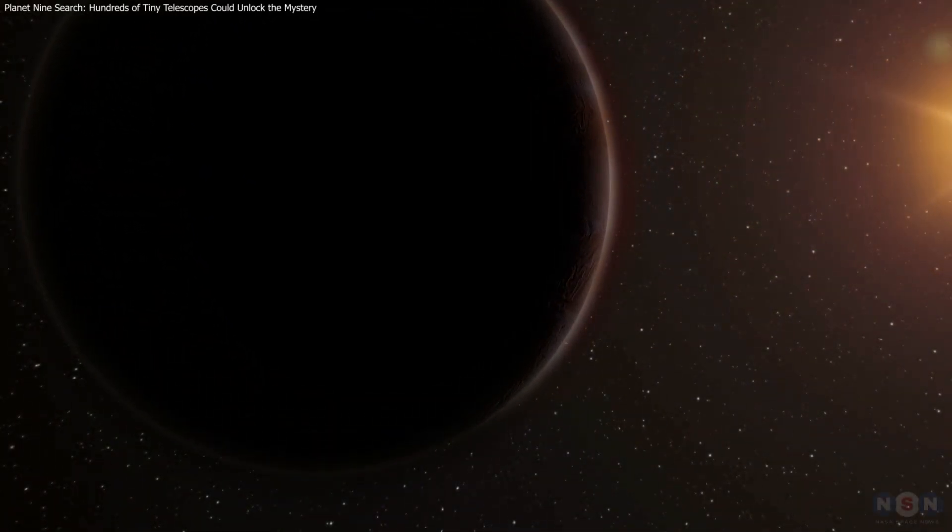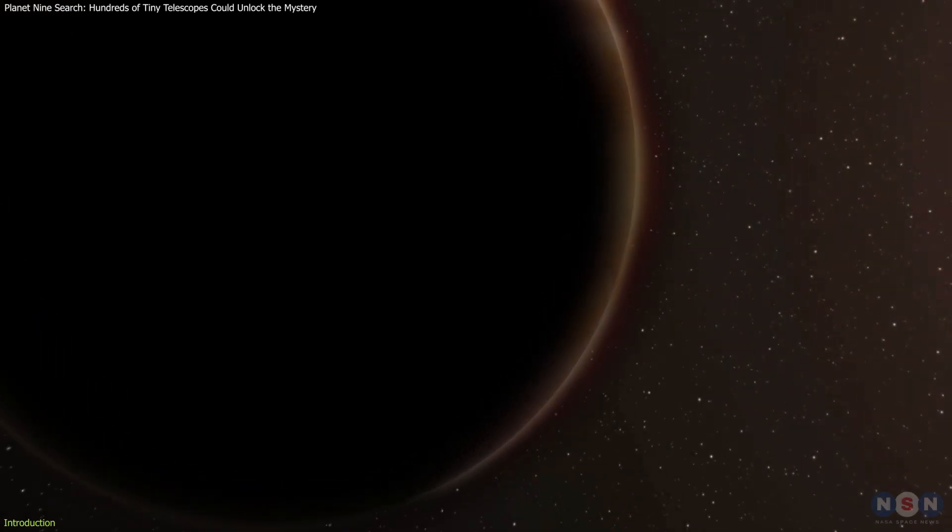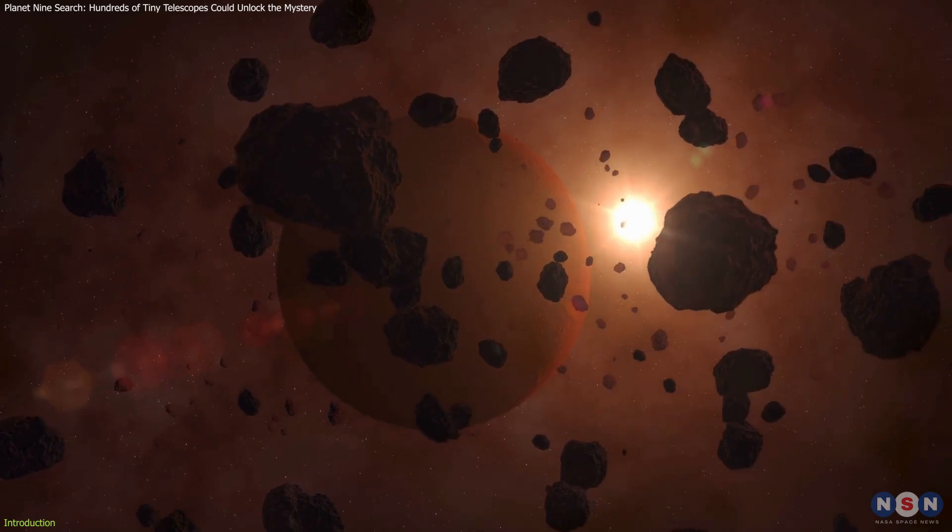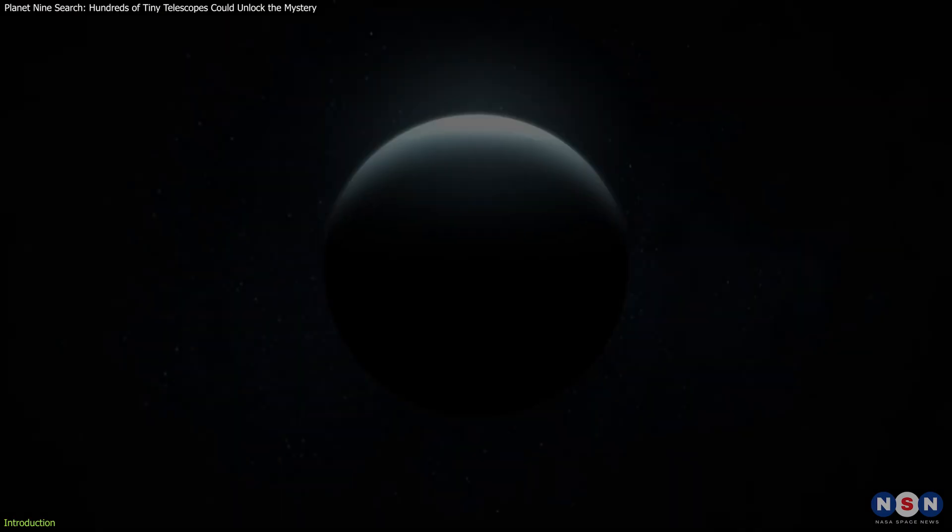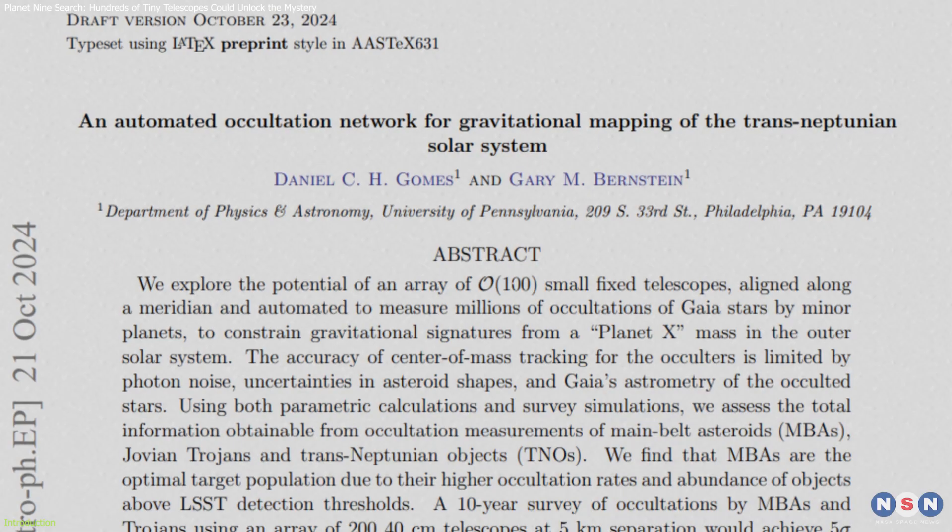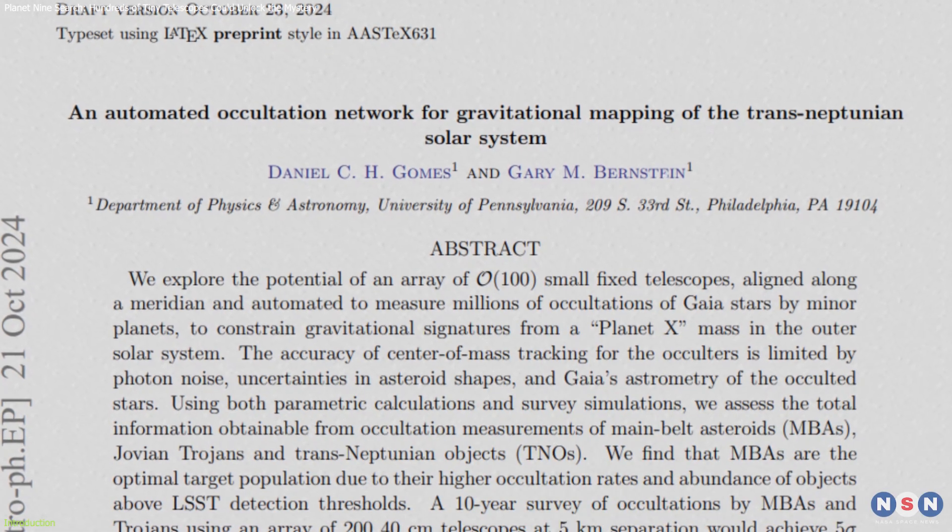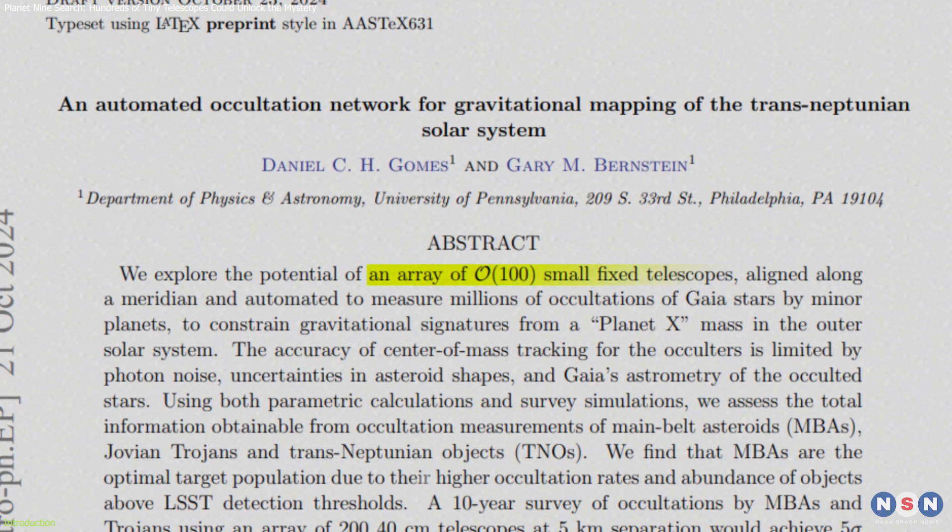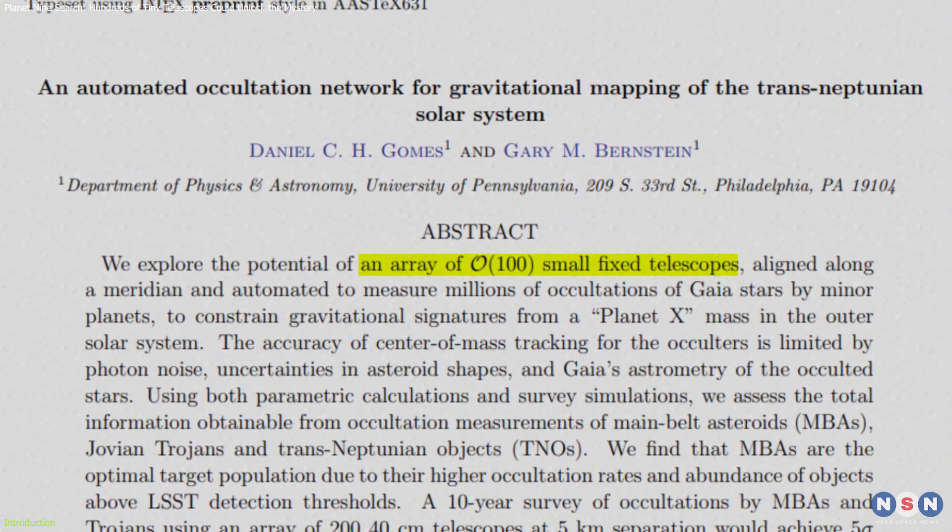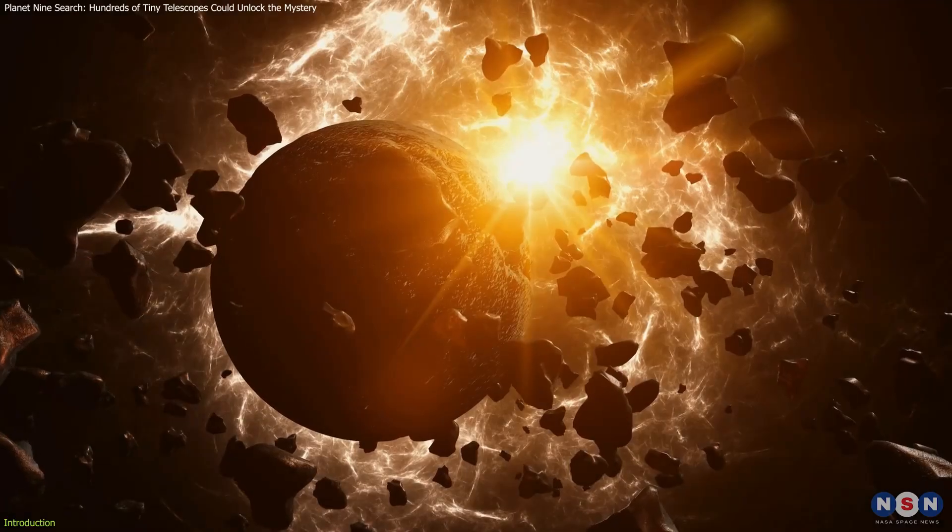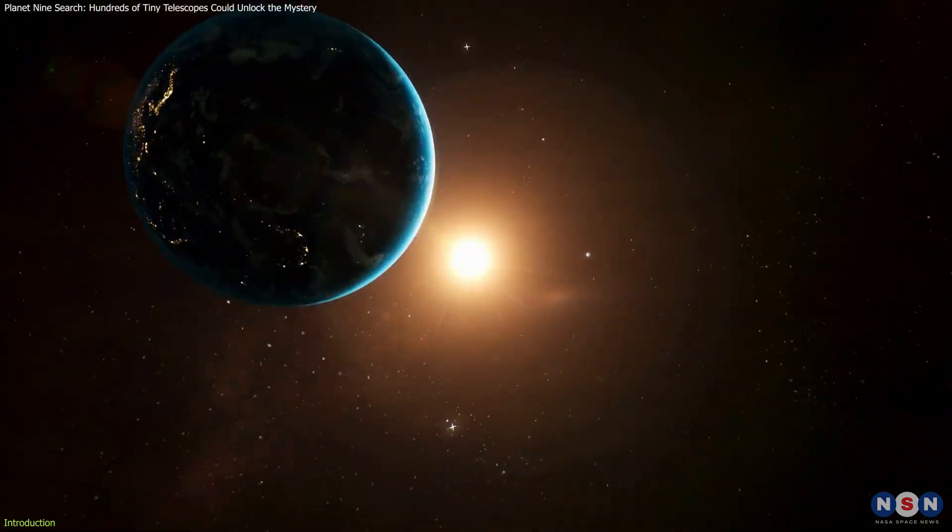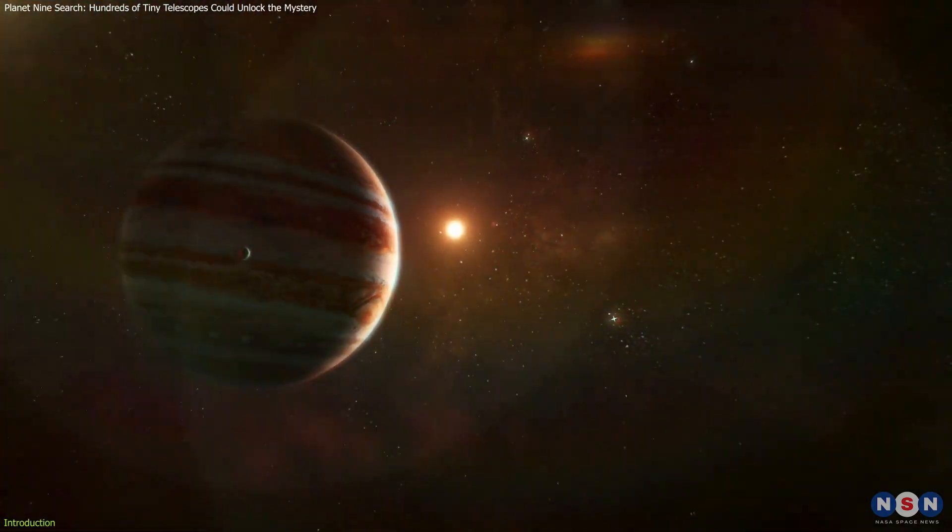The search for Planet 9, a hypothetical massive planet lurking beyond Neptune, has intrigued astronomers for years. Despite extensive efforts, this mysterious celestial body remains undiscovered. Recently, scientists proposed a groundbreaking approach using a network of small telescopes to detect tiny stellar occultations caused by distant objects. This technique could finally reveal the presence of Planet 9 and deepen our understanding of the solar system's outer reaches.